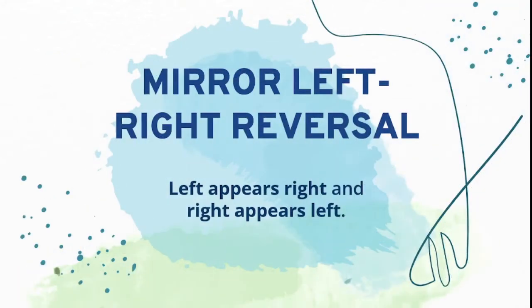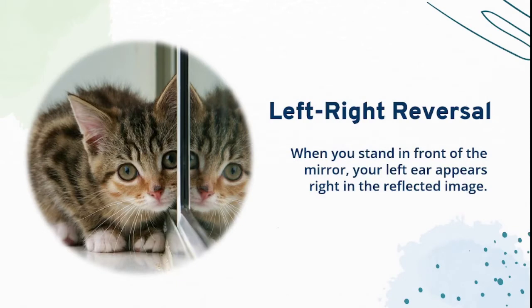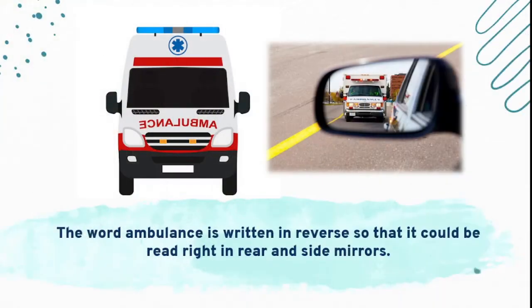Reflection of light in mirrors give mirror left-right reversal effect where left appears right and right appears left. When you stand in front of the mirror, your left ear appears right in the reflected image and vice versa. That is why the word ambulance is written in reverse, so that it could be read right in rear and side mirrors.